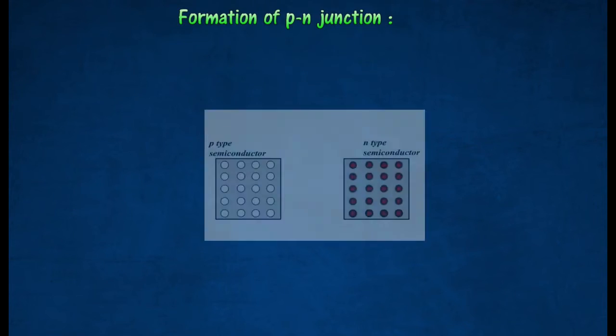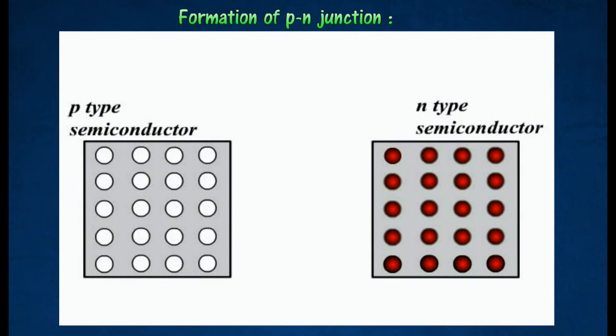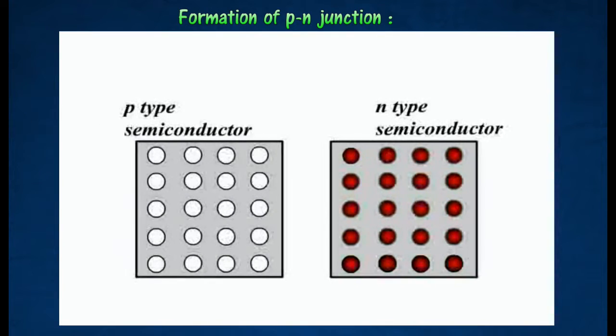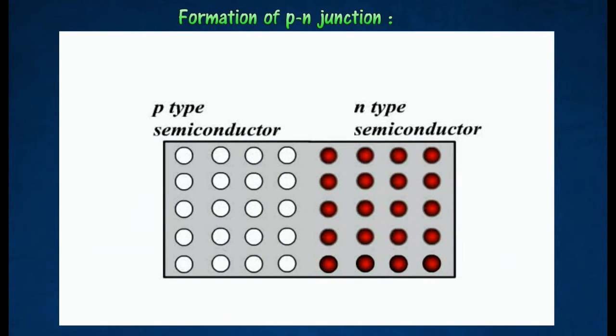When a P-type semiconductor is joined to an N-type semiconductor, a small quantity of electrons on the N side of the junction are attracted by the holes in the P side. Both electrons and holes diffuse respectively across the junction to the other side.